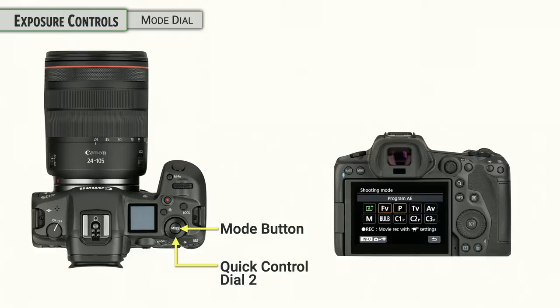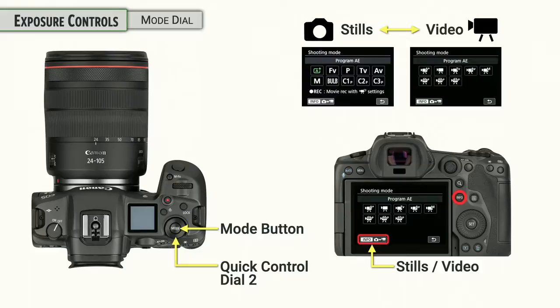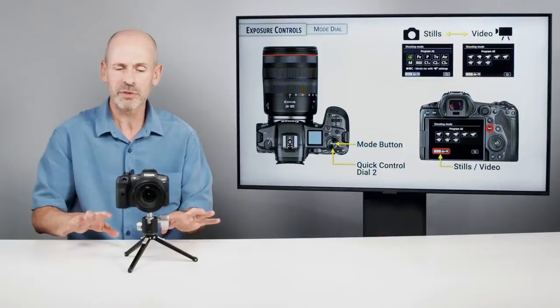Let's start with the Mode button and the Quick Control Dial 2 — the Mode button and Mode Dial. This is how you're going to be switching through the main functions on the camera. If you press the Info button after you have pressed the Mode button, you will be switching between stills and video. That is the easy way for changing between the still portion and the video portion — they're very different ways of functioning the camera.